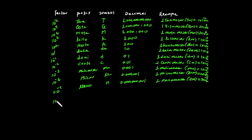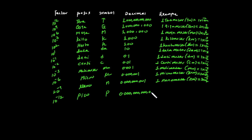Finally, 10 to the power of minus 12 is Pico, represented by the symbol p. Its decimal value is 0.000000000001. 1 picometer is equal to 1 times 10 to the power of minus 12 meters.